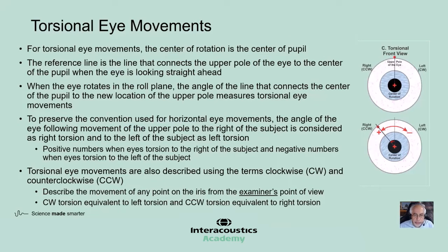In contrast, the center of rotation for torsional eye movements is the center of the pupil, which itself can move with horizontal and vertical eye movements. The reference line is the line that connects the upper pole of the eye to the center of the pupil when the eye is looking straight ahead. When the eye rotates in the roll plane, the angle of the line connecting the center of the pupil to the new location of the upper pole is used to measure torsional eye movements. To be consistent with convention, the movement of the upper pole to the right of the subject is considered right torsion, and to the left is left torsion. Positive numbers are used for rightward torsion and negative numbers for leftward torsion.